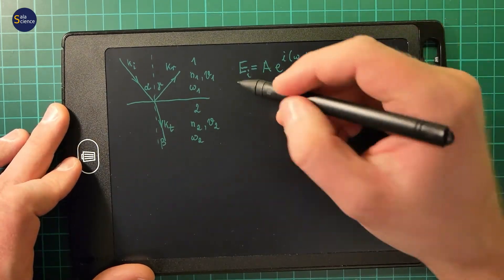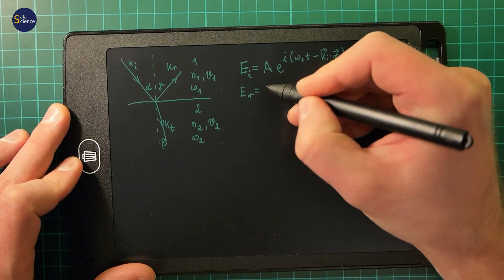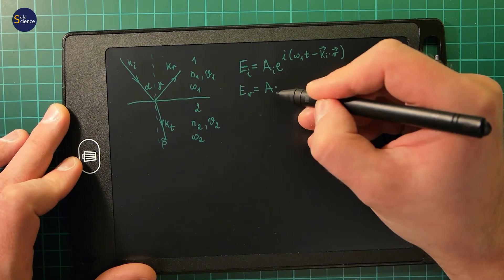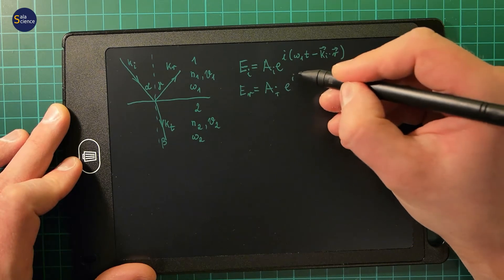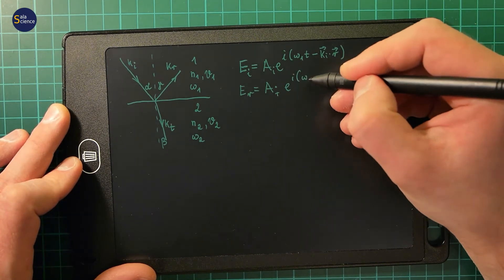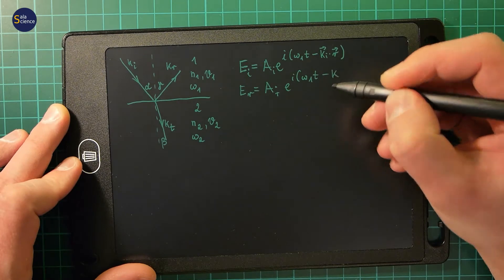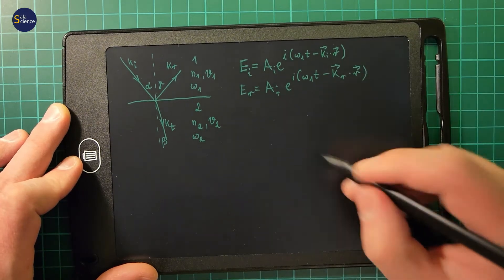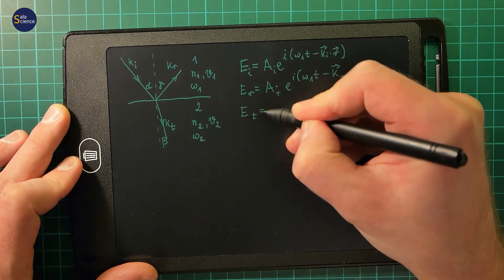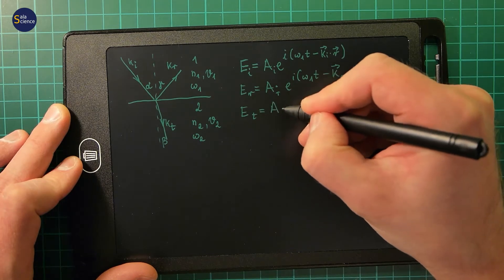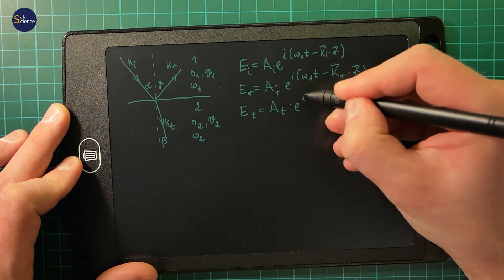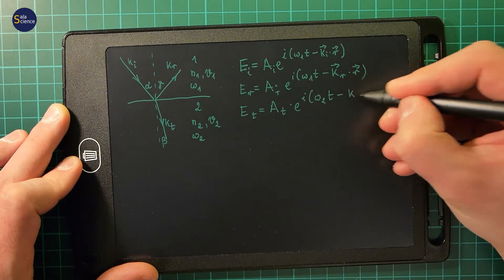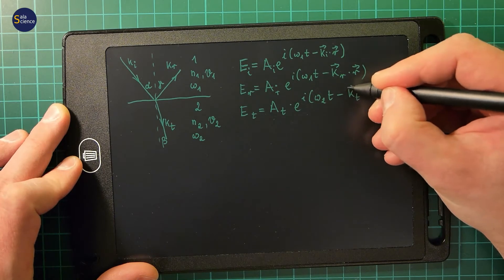I will have the same for Er, which is equal to some amplitude r, e to the power of i, omega 1 times t minus kr times r. And for the transmitted wave, I will have amplitude At, e to the i, and here is a different frequency, omega 2 times t minus kt times r.